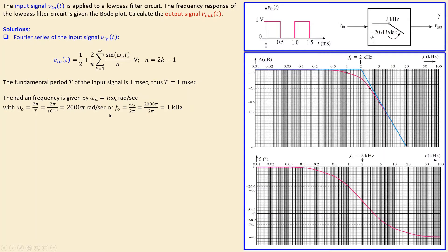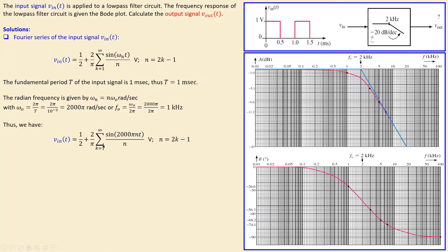In hertz, f0 equals omega 0 divided by 2 pi, which is 1 kilohertz. That covers all necessary information for the input signal. If we work out omega n, we have 2000 pi times n times t, so the AC term is now specifically given with omega n worked out as 2000 pi n.